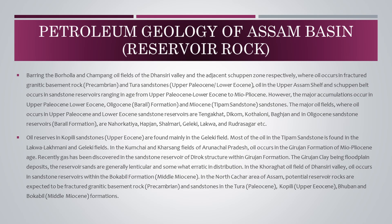Most of the oil in the Tipam sandstone is found in the Lakhwa-Lakhmani and Gheleki fields. In the Koomchai and Kharsan fields of Arunachal Pradesh, oil occurs in the Girijan formation of Mio-Pliocene age. Recently, gas has been discovered in sandstone reservoirs within the Girijan formation. The Girijan clay being floodplain deposits, the reservoir sands are generally lenticular and somewhat erratic in distribution. In the Khoraghat oil field of Dhanseeri Valley, oil occurs in sandstone reservoirs within the Bokabil formation, Middle Miocene. In the North Kachar area of Assam, potential reservoir rocks are expected to be fractured granitic basement rock (Precambrian) and sandstones in the Tura (Paleocene), Kopili (Upper Eocene), Bhuban, Bokabil (Middle Miocene) formations.